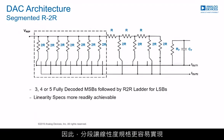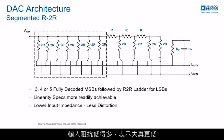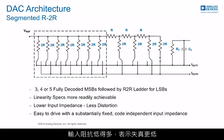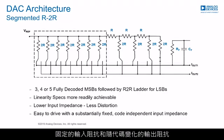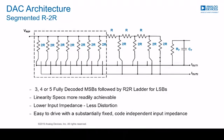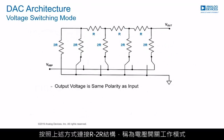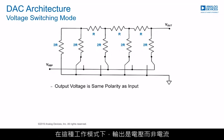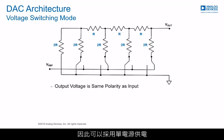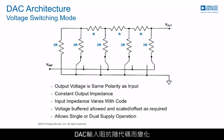Therefore, segmentation allows linearity specifications to be more easily achievable. The input impedance is much lower, which means lower distortion. This structure exhibits a fixed input impedance and an output impedance that varies with code. Connecting the R-2R structure in voltage switching mode means the output is a voltage and not a current. The positive reference gives a positive output voltage, allowing for single supply operation. In this mode, the DAC input impedance varies with code, whereas the DAC output impedance is fixed.